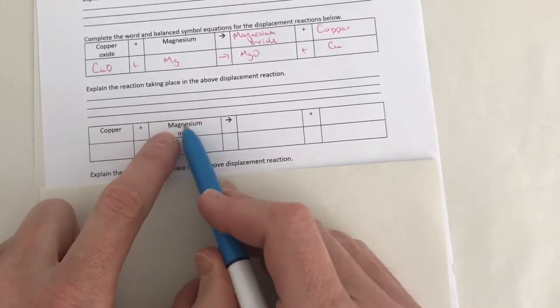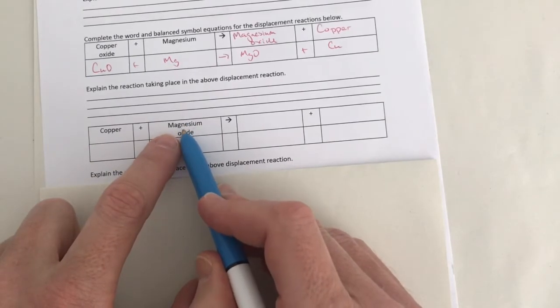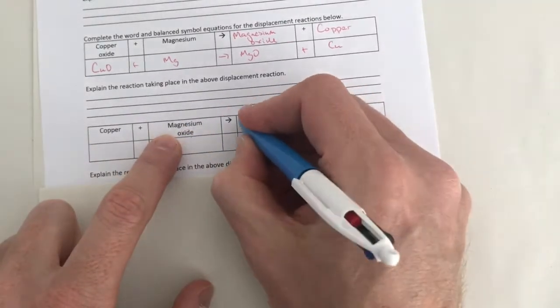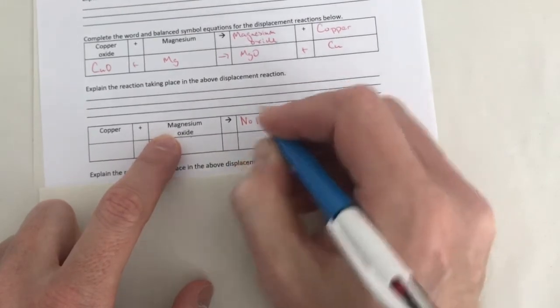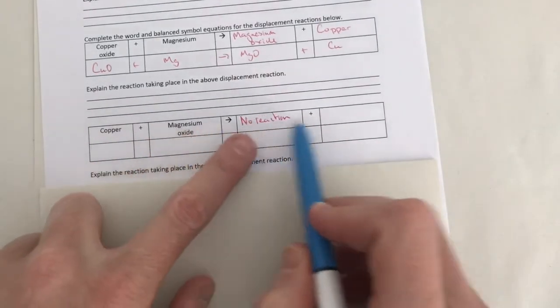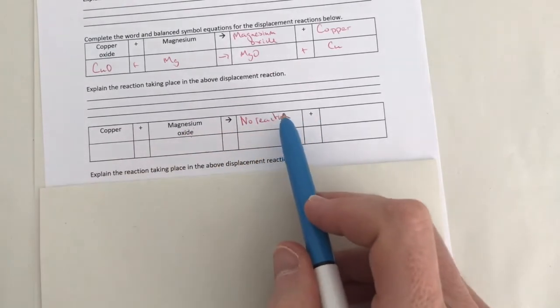Therefore, the copper cannot displace, push out the magnesium from this compound. So we have a choice of just saying there's no reaction, or sometimes you might see it written where these are just written exactly the same, this side showing there has been no change.